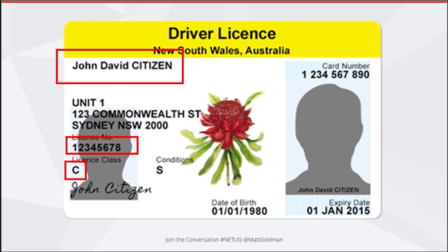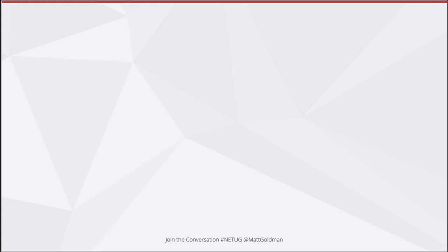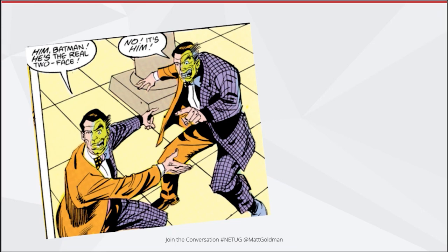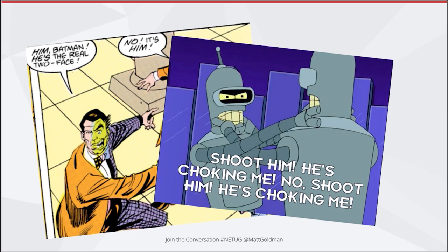So why do we care? If you're running an API or a resource you want to protect, multiple people can claim to be a certain person and you need to know which one is authentic. Nobody wants to end up in a situation where you can't verify who is real. There's got to be a better way of authenticating people and proving they are who they say they are.